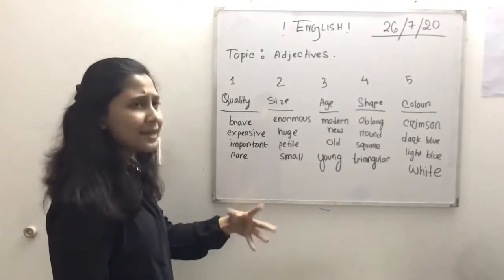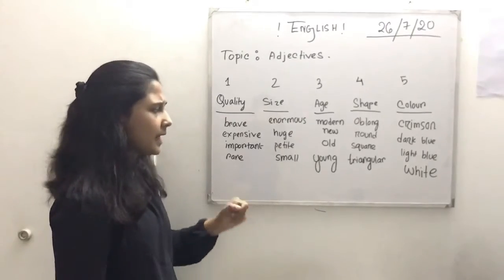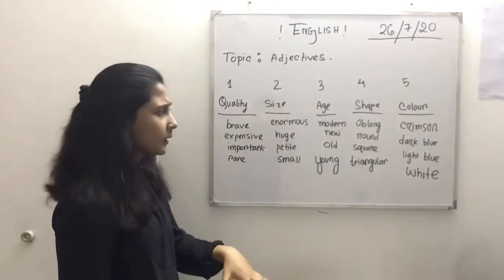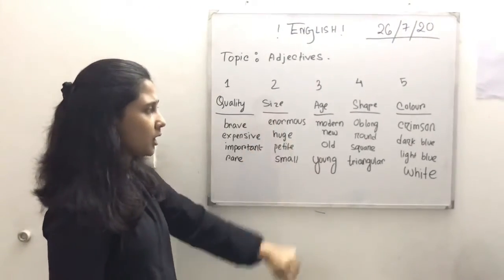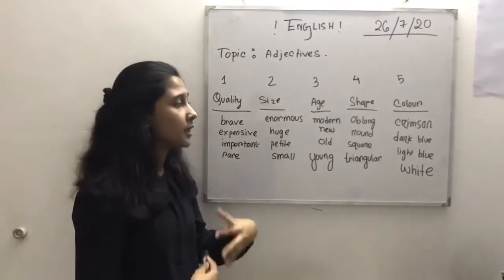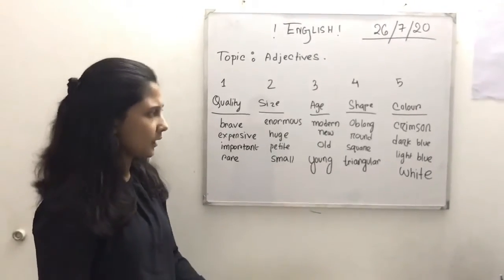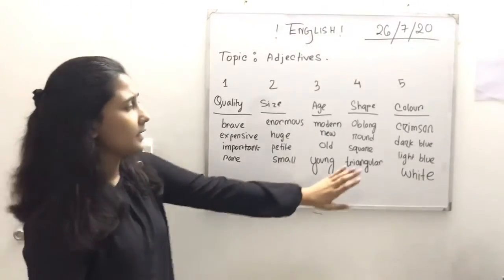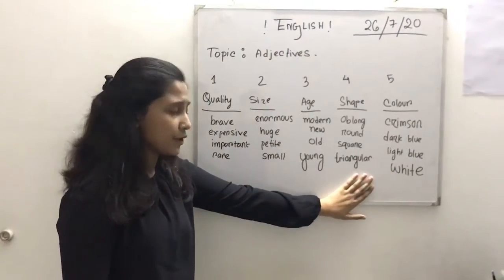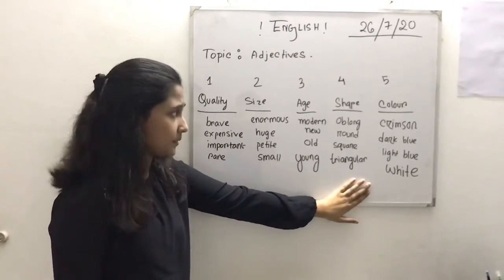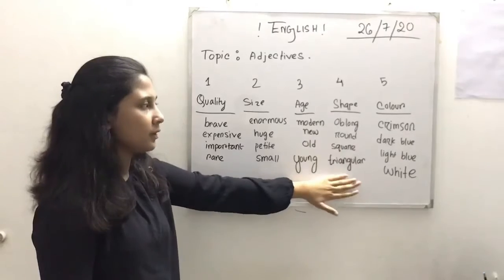For size, examples are enormous, huge, petite, and small. Then age — these can be modern, new, old, or young. And adjectives of shape include oblong, round, square, and triangular.